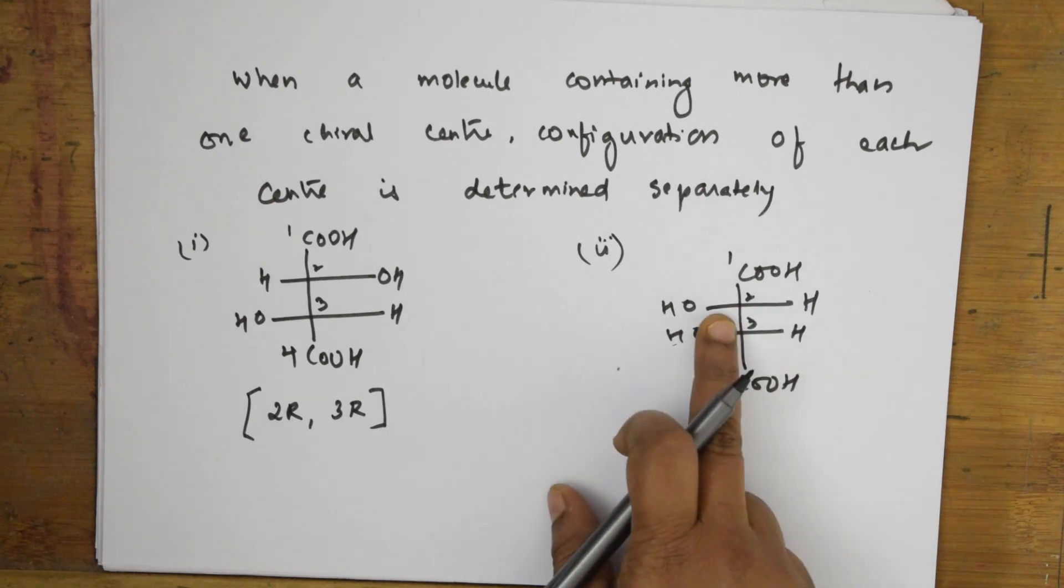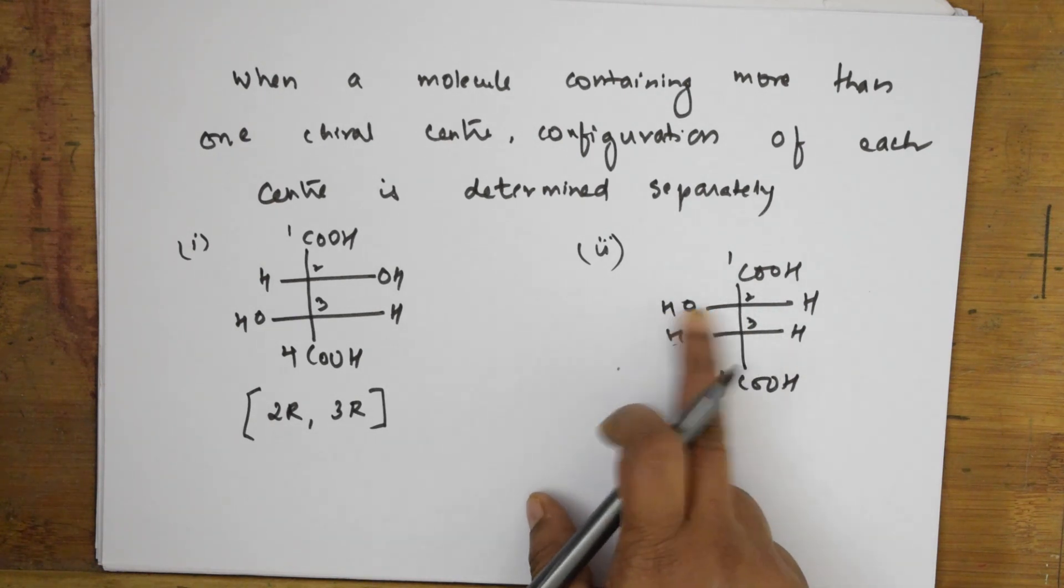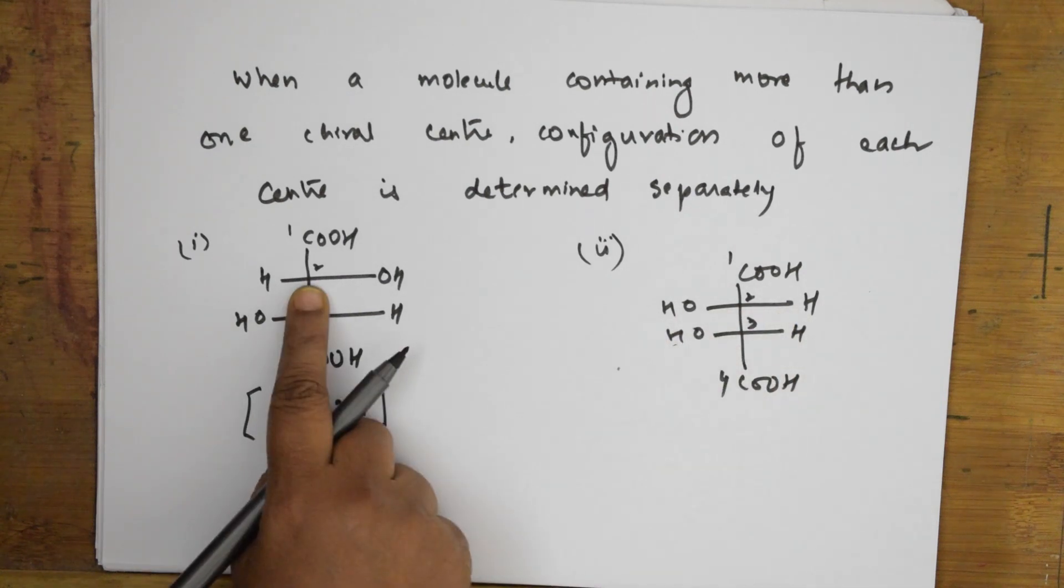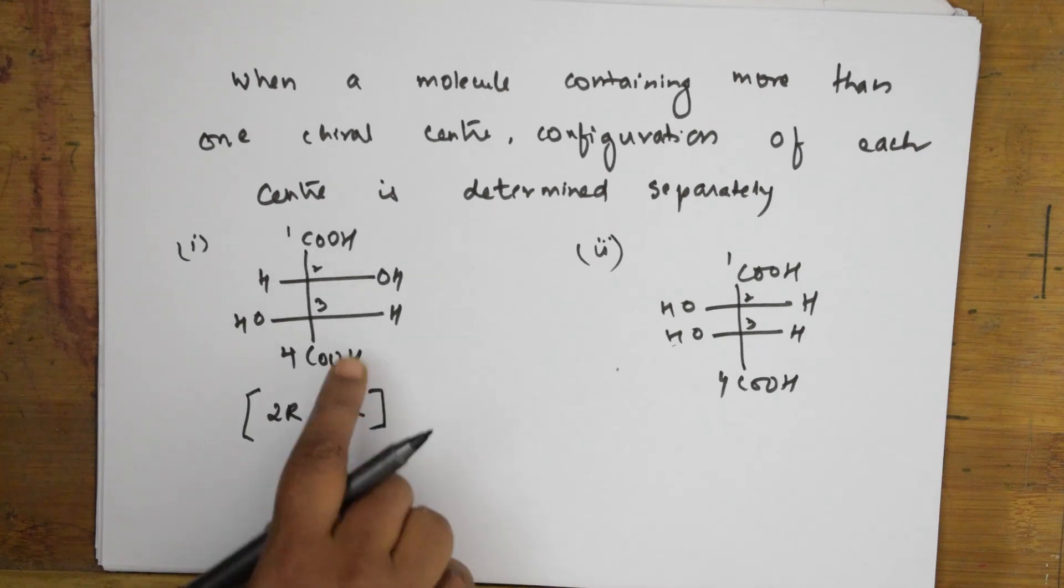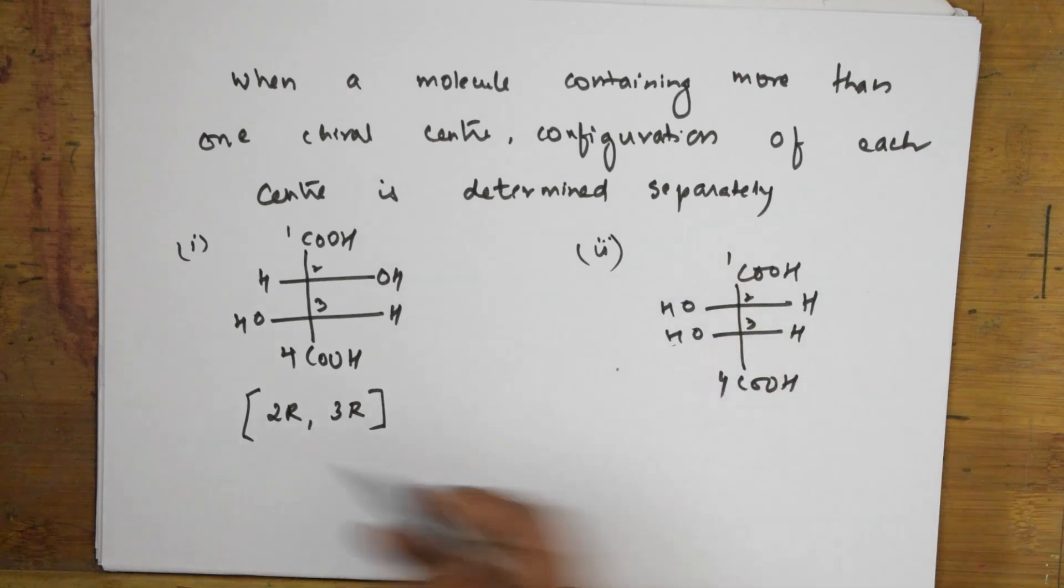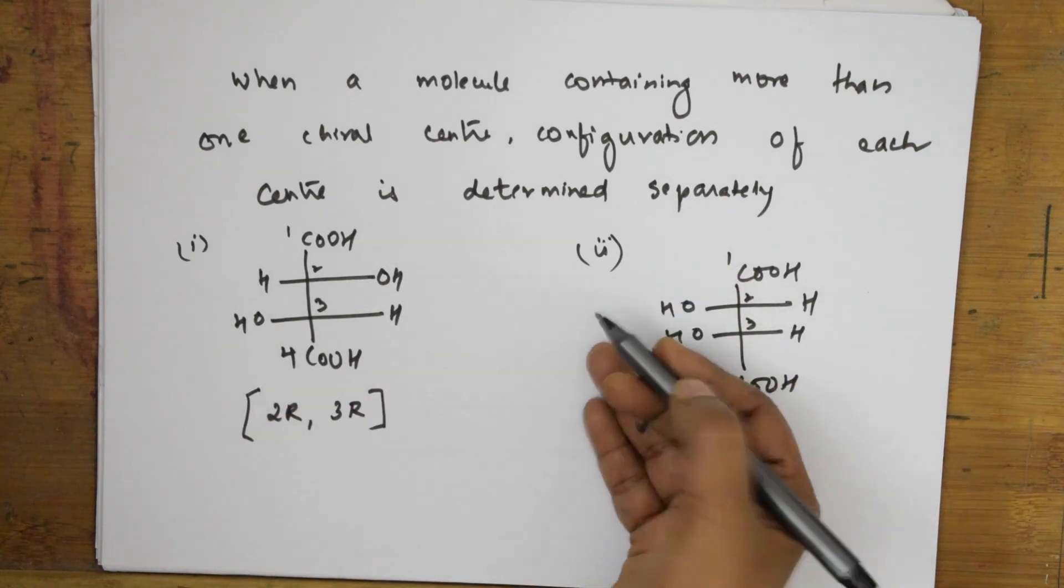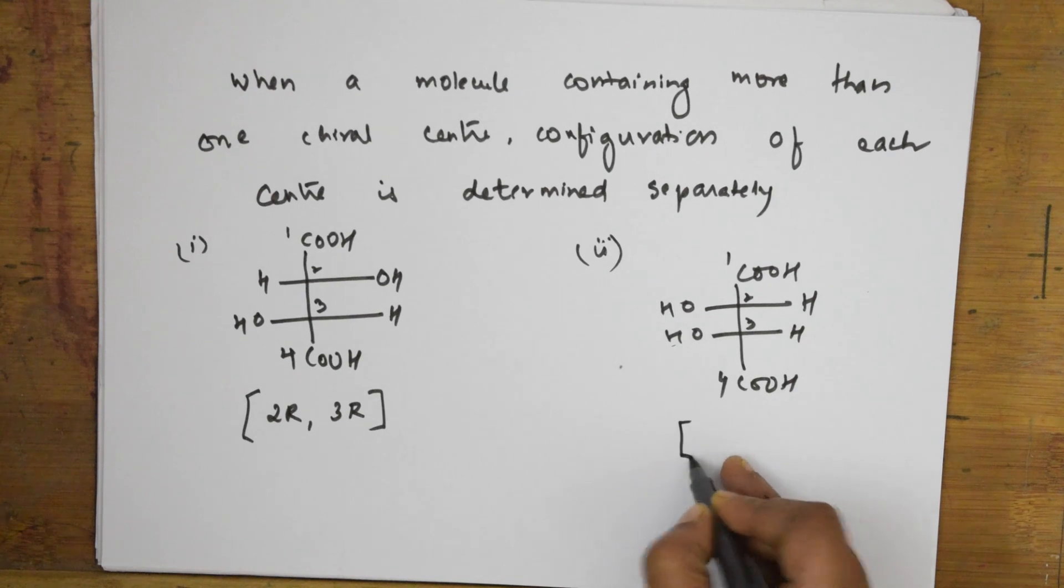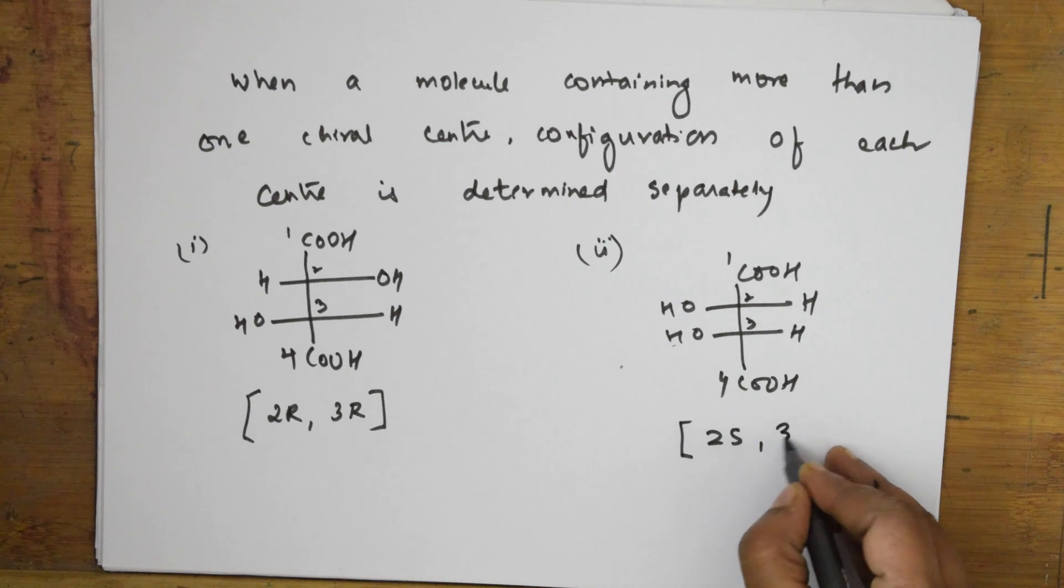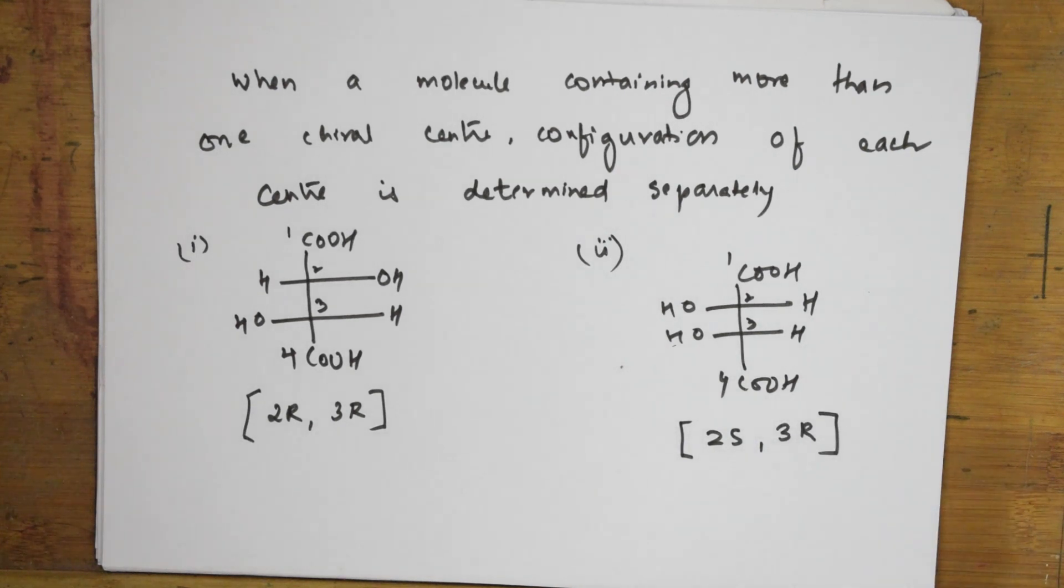Suppose if I take this, here two R, second R clockwise, three R clockwise. In this case, this has taken the anticlockwise as you can see. There is a shift of the molecule in this direction, so this becomes S. So this is 2S and this is again at 3R. So this is how we name or indicate the CIP rule using different examples, step one, step two, and step three.